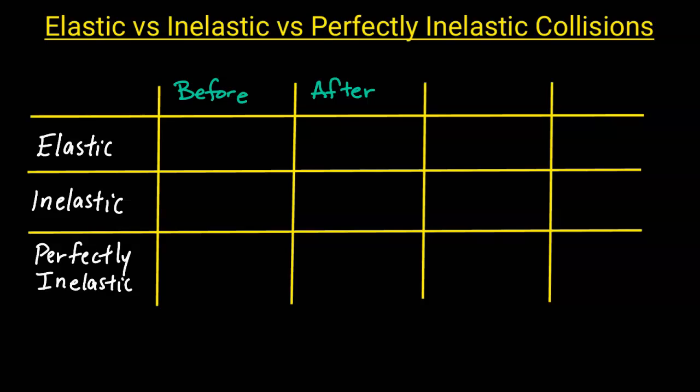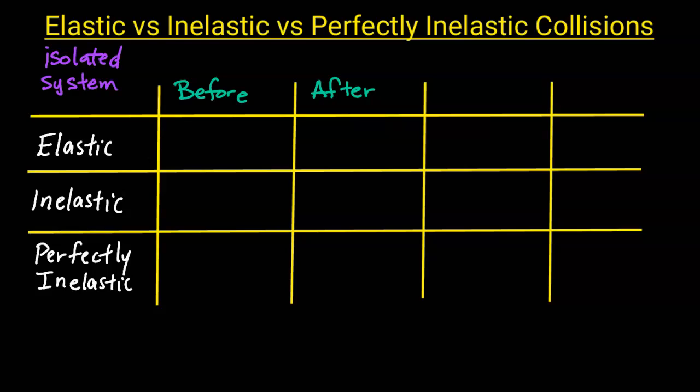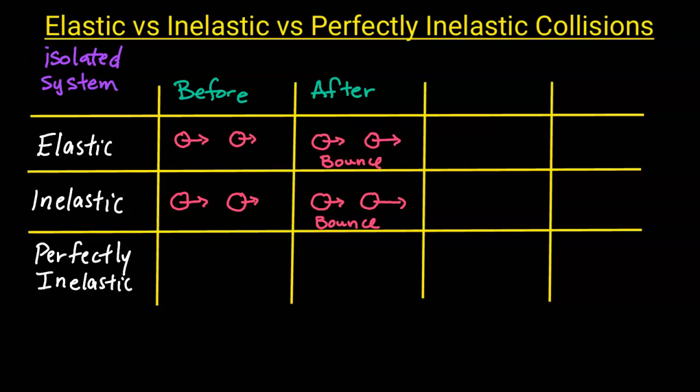In all of these situations, we're going to assume an isolated system, which means that there are no external net forces. In an elastic collision, the objects will bounce off after they collide. In an inelastic collision, the objects also bounce off after they collide. And then in a perfectly inelastic collision, the objects stick together after they collide.